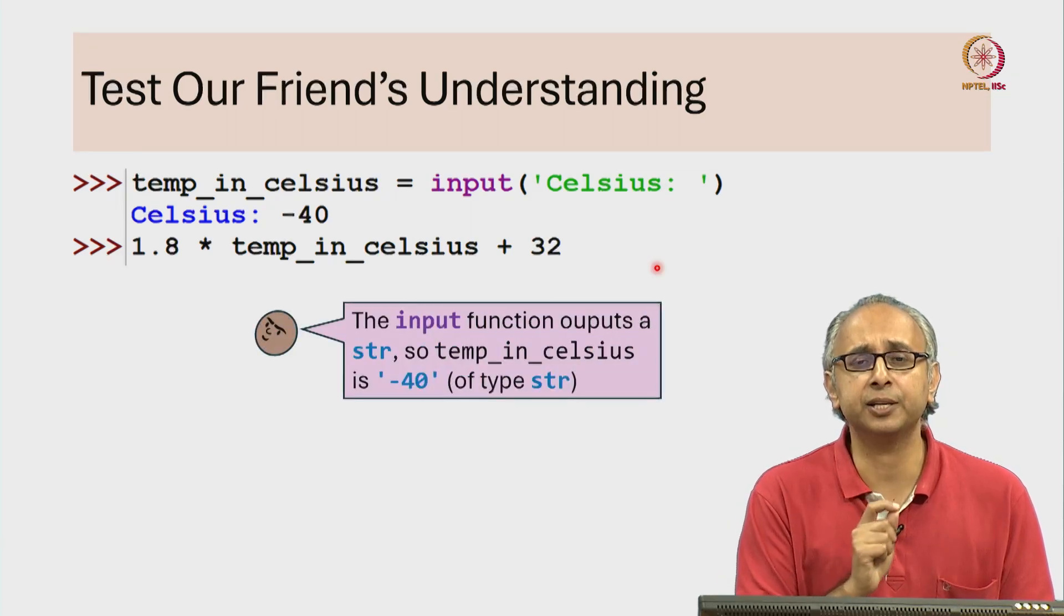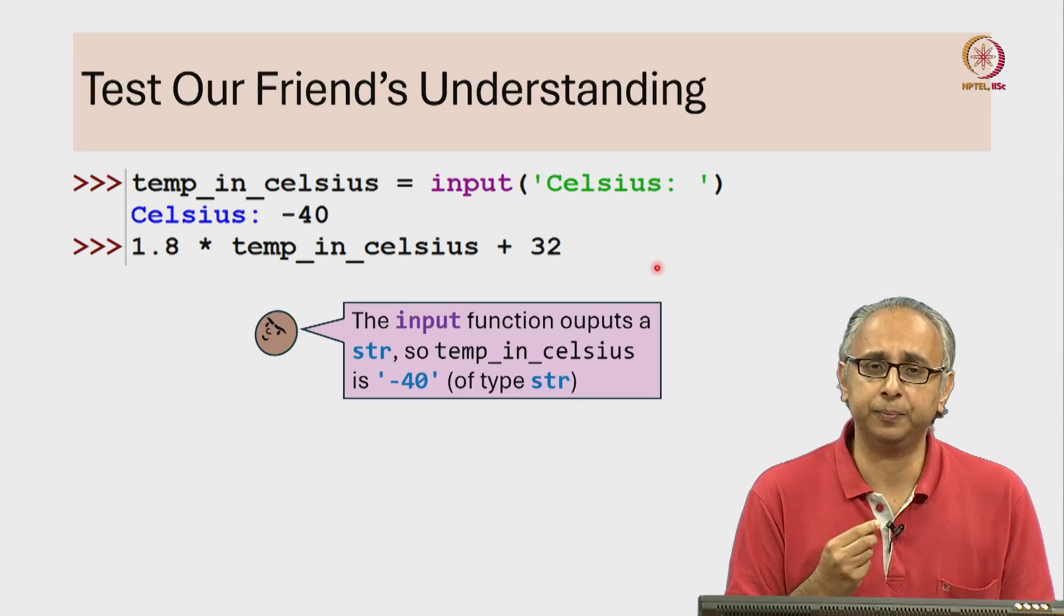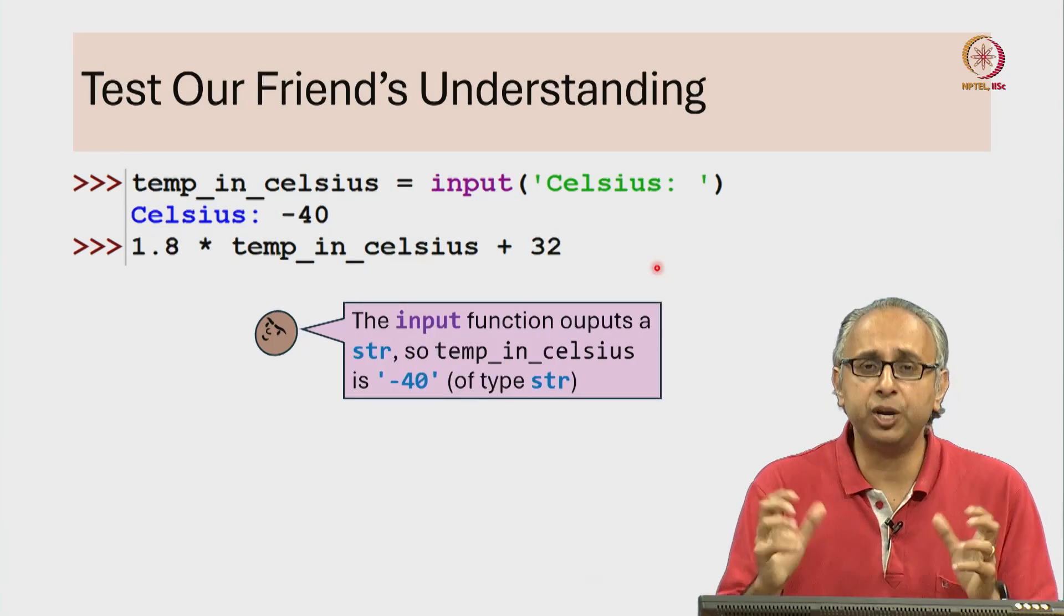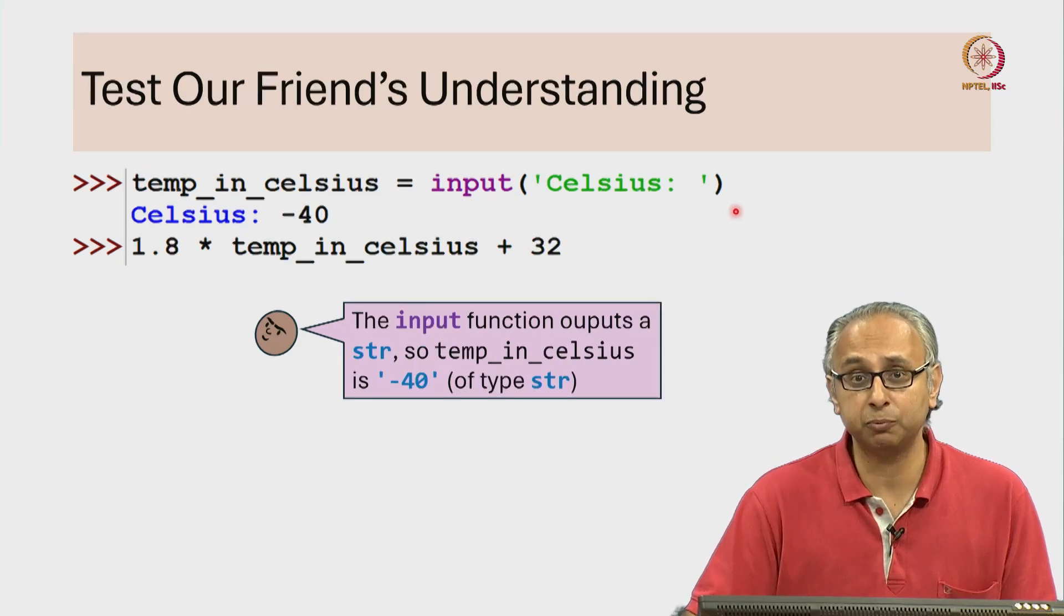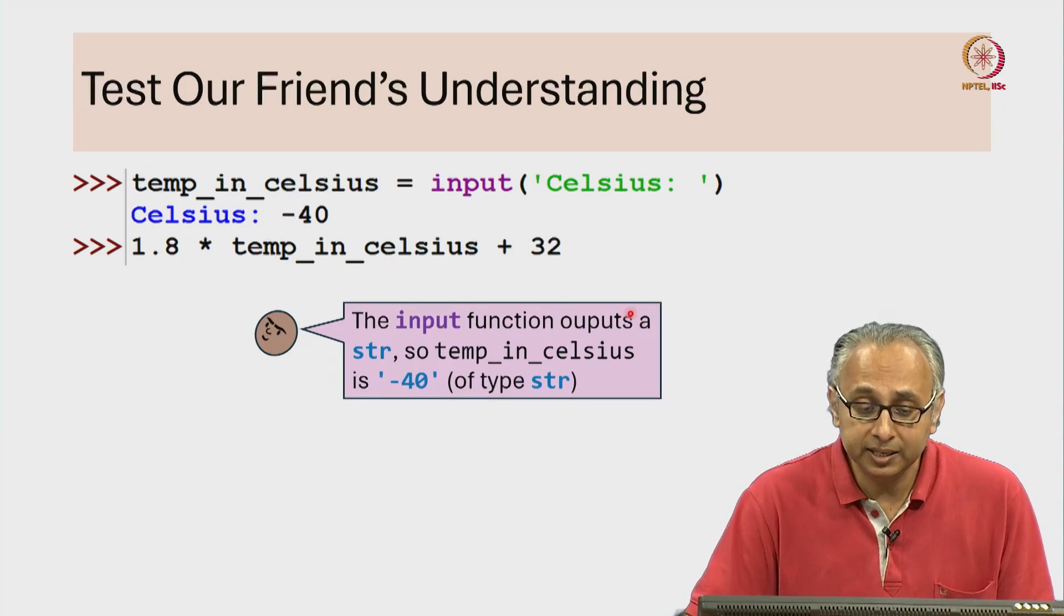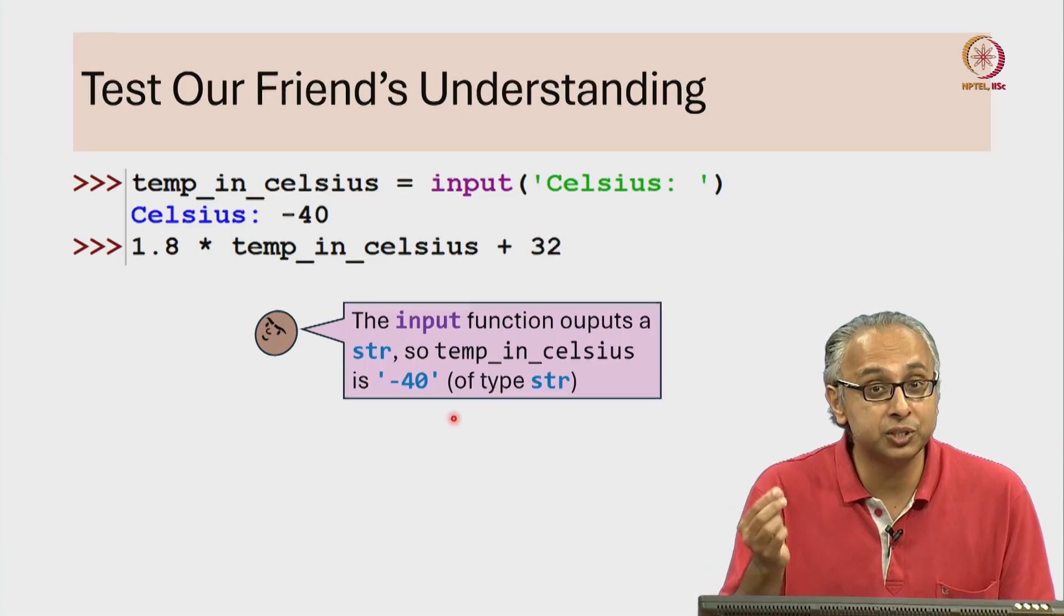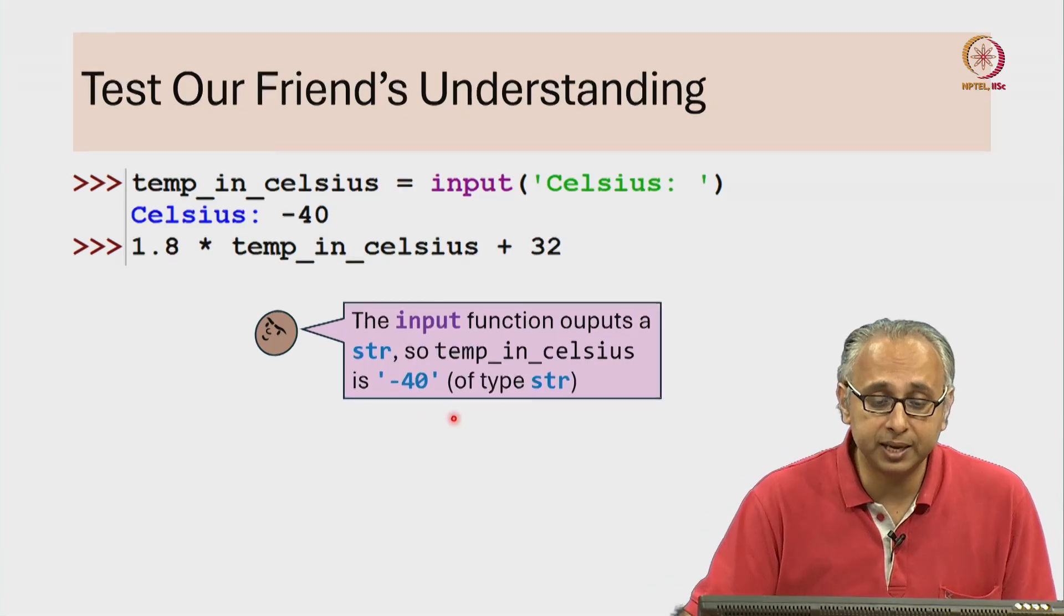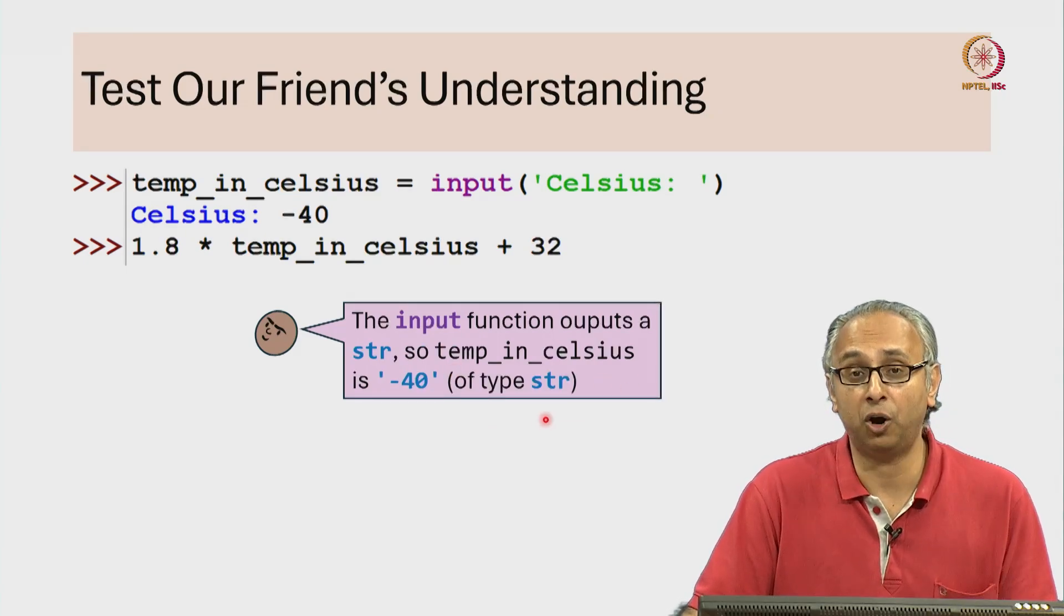Firstly, our friend says the input function outputs or returns a string. So, the object that this right hand side of assignment statement will evaluate to is this object in quotes minus 40 which is of type str. And so our friend says this temp_in_celsius will be a string object.